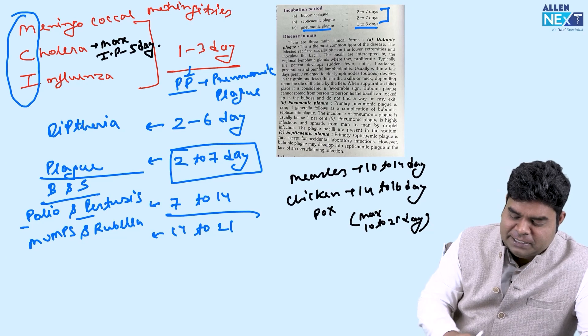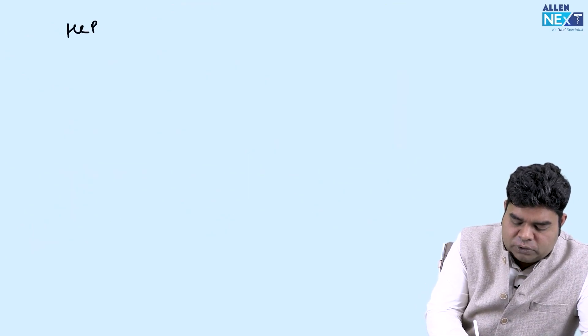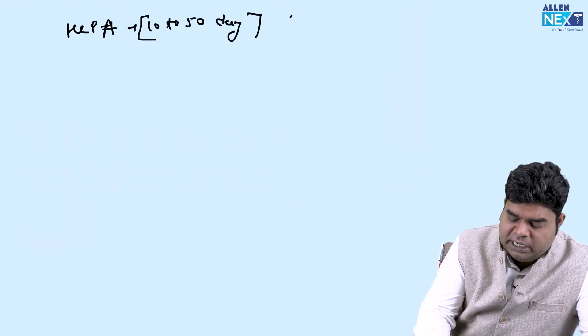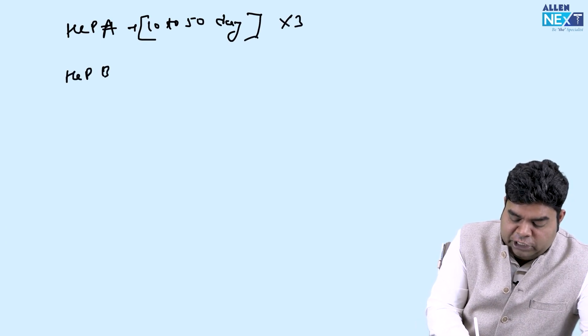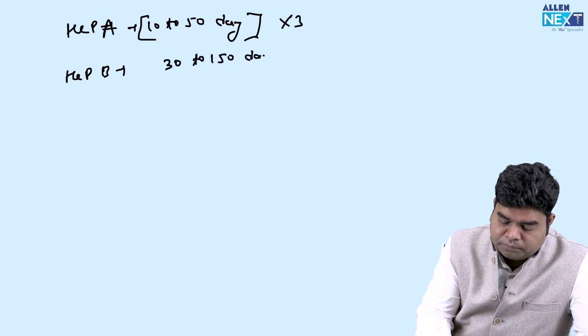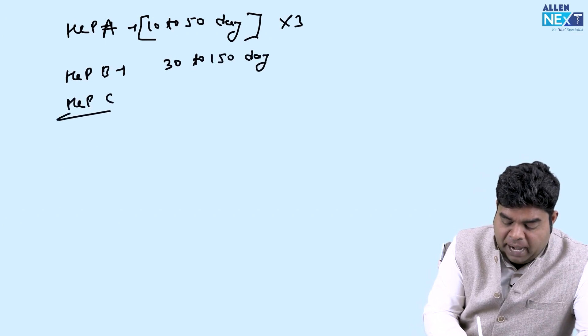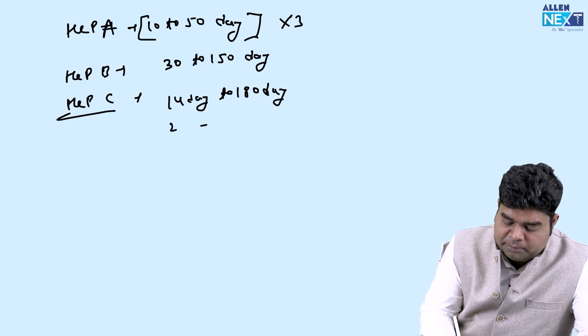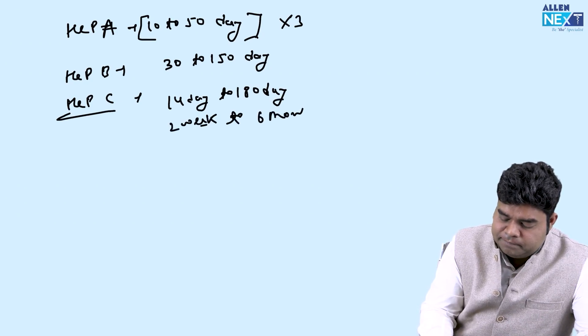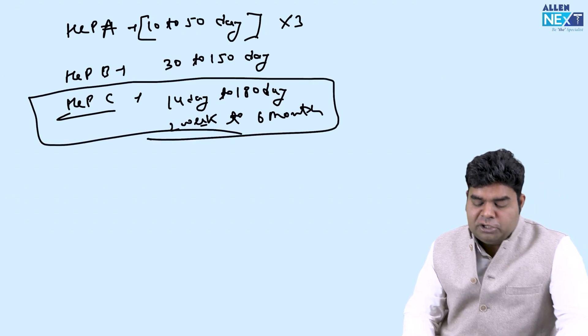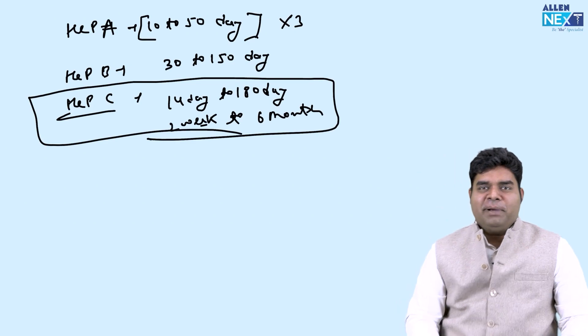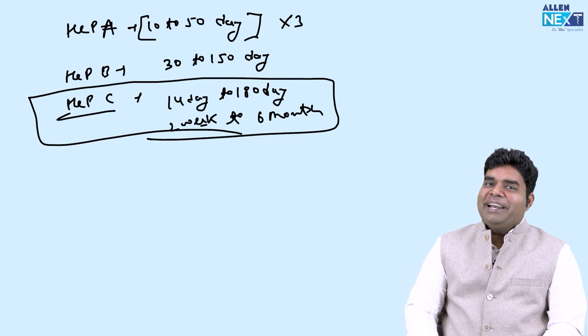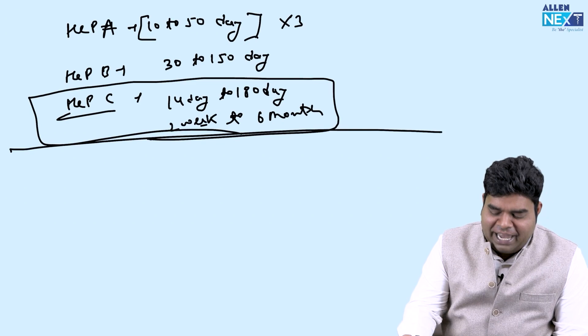Hepatitis A, B and C, which is also simple to remember. Hepatitis A is 10 to 50 days and if you multiply 10 to 50 everyone with 3 it will become the incubation period for B, 30 to 150 days. And for hepatitis C it is maximum 14 days to 180 days, that means 2 weeks to 6 months. C has the maximum incubation period. Hepatitis A 10 to 50 multiplied by 3 and it will become for B 30 to 150. That is all from the incubation period part, I think you all can remember it right now.